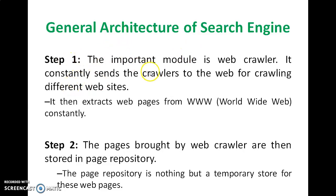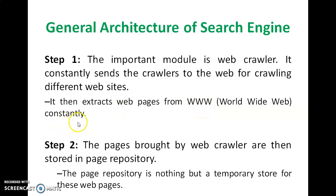What are the steps? The first step is the web crawler. It is an important module and it constantly crawls different websites, extracting web pages from the worldwide web. Step 2: the pages brought by the web crawler are then stored in the page repository. The page repository is nothing but a temporary store for web pages.